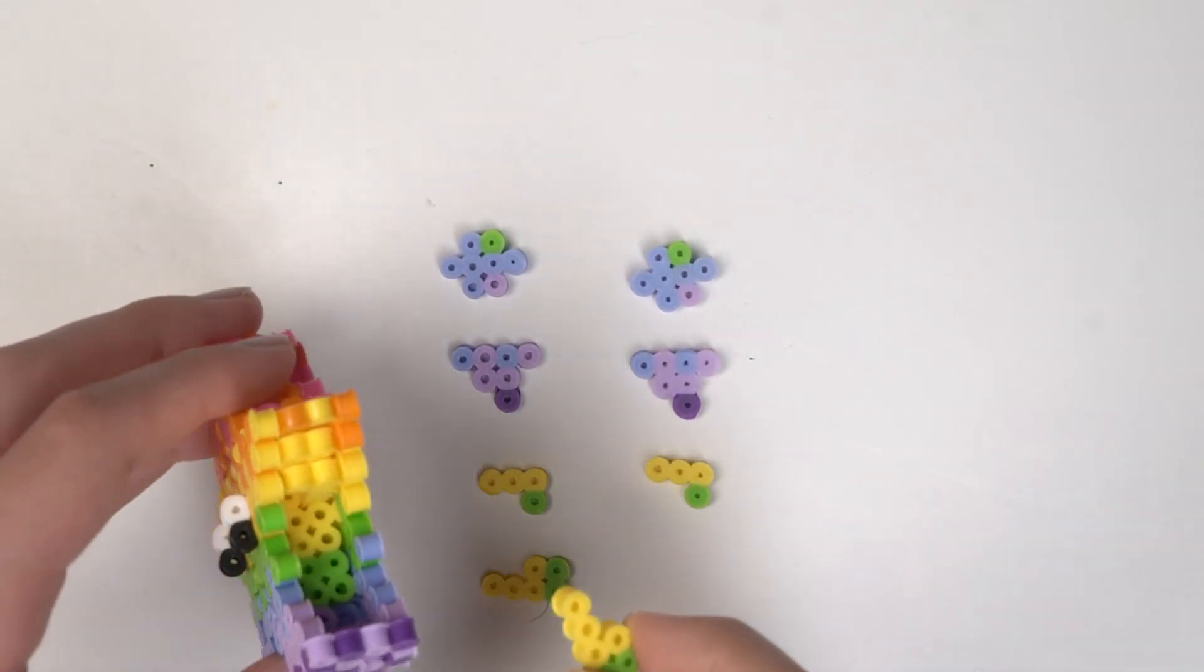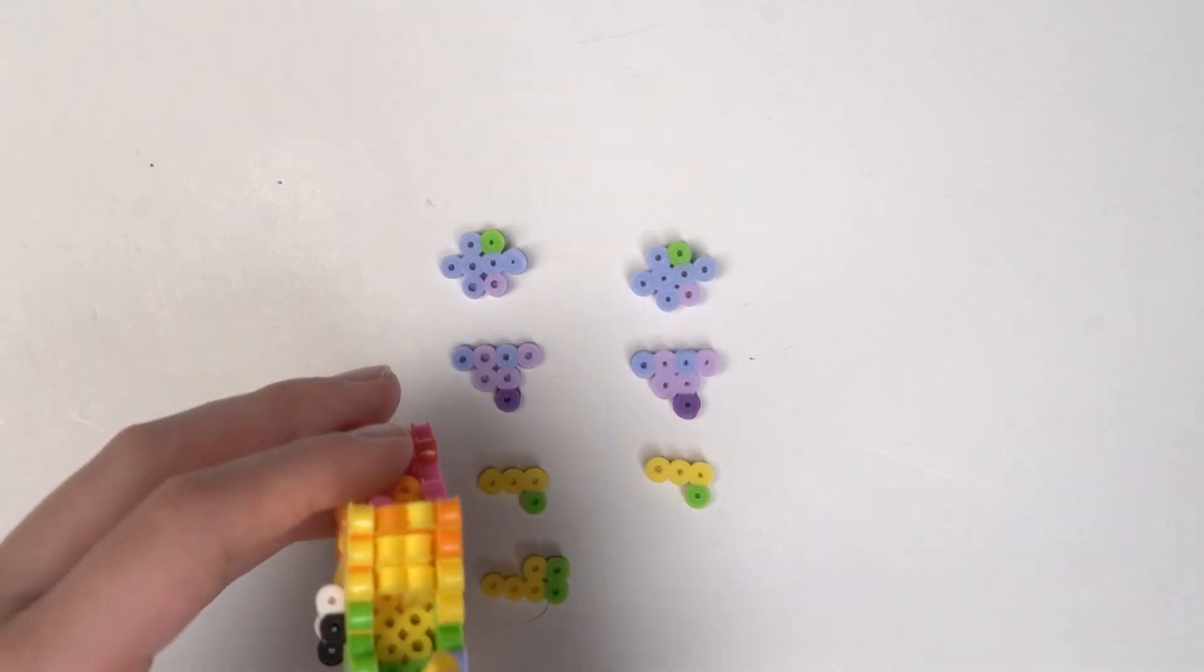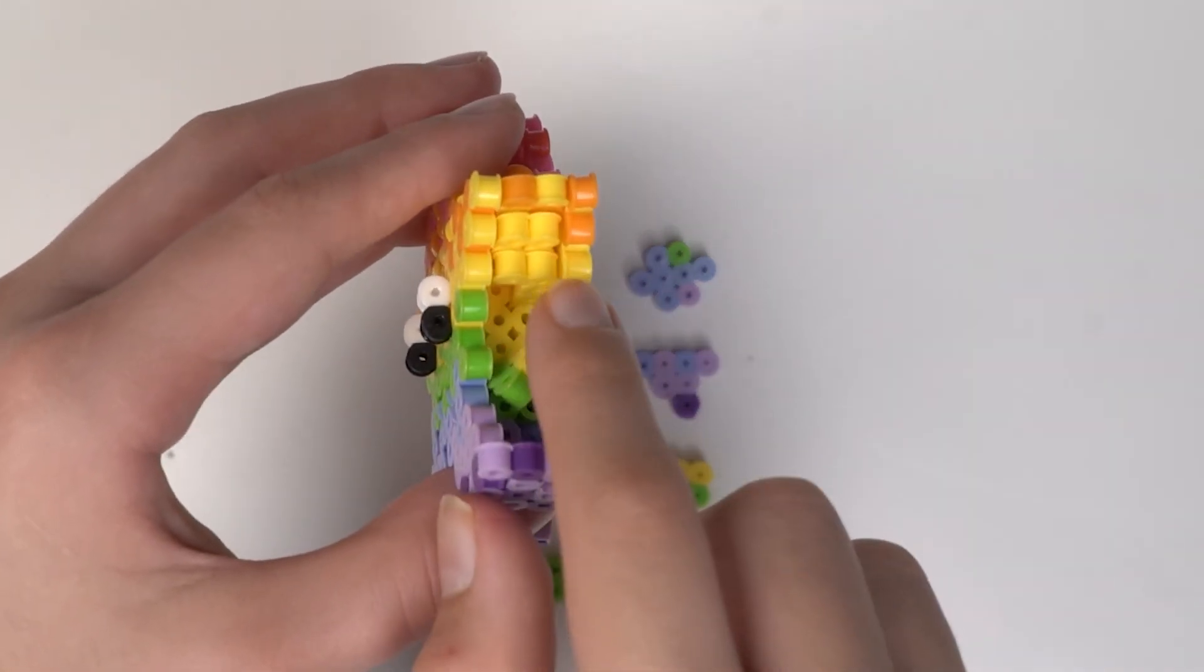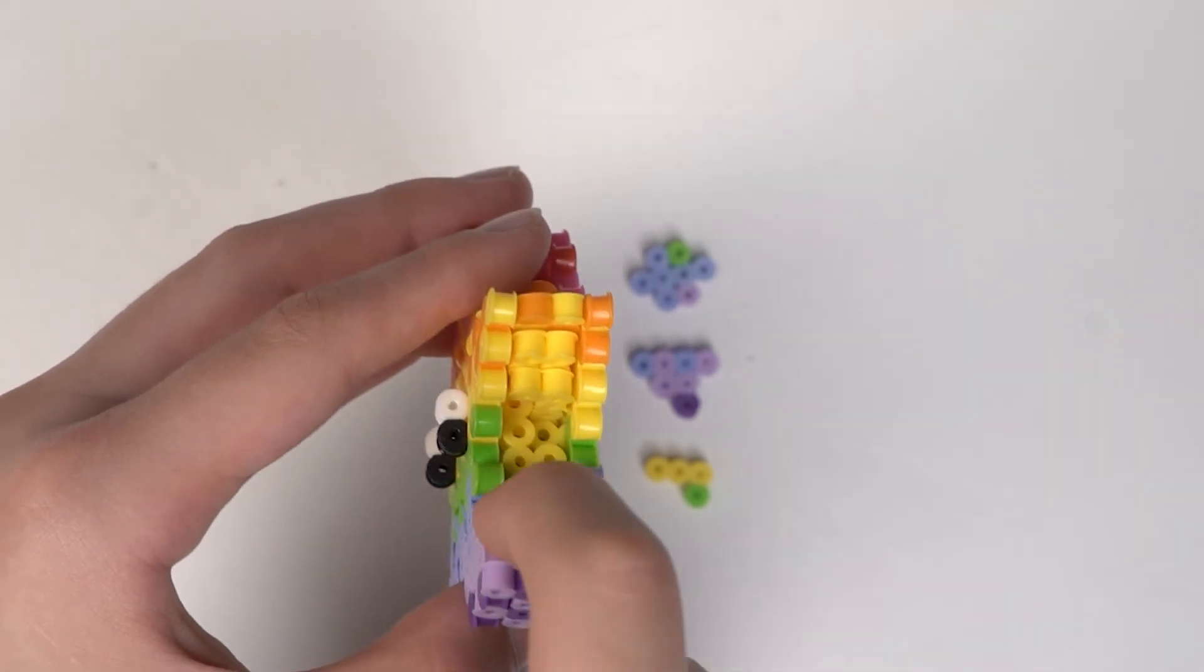Now we're going to grab this yellowish and green L and we're going to stick it onto the side. After this we're going to push it on.